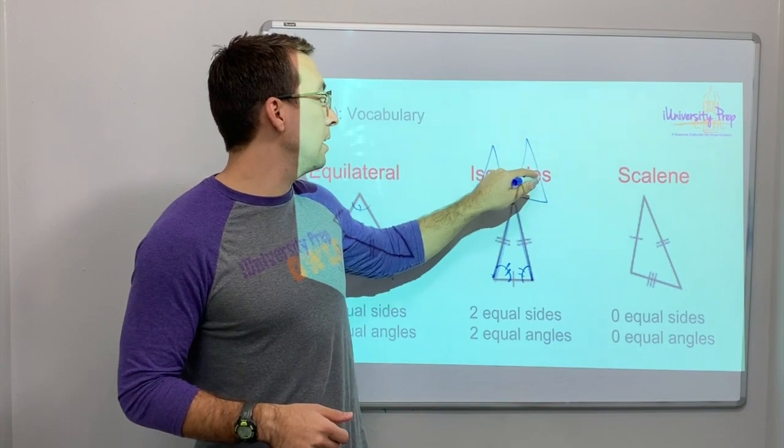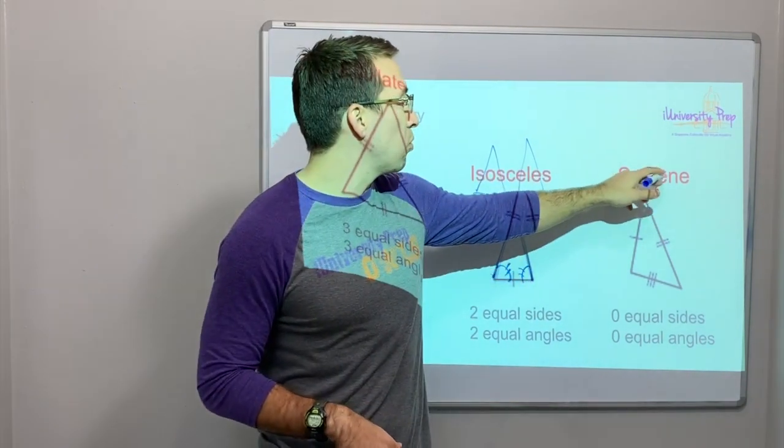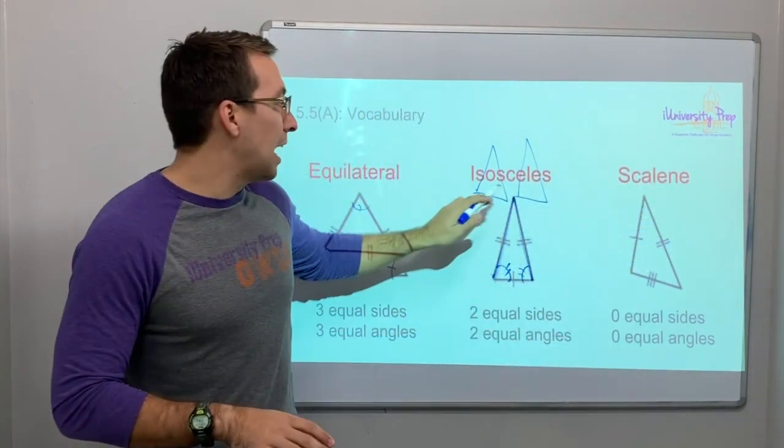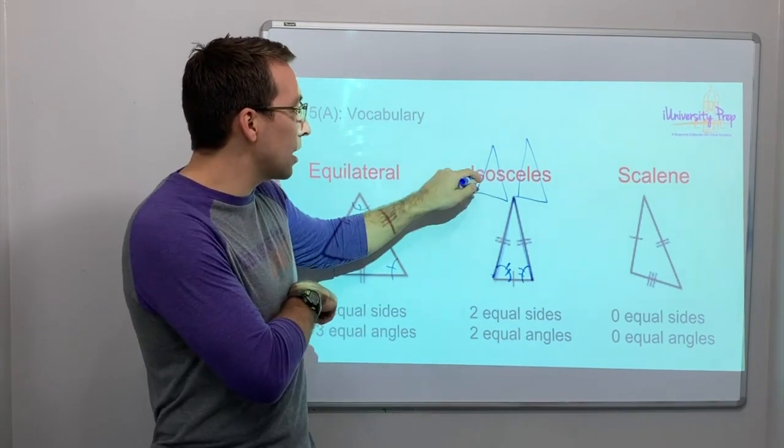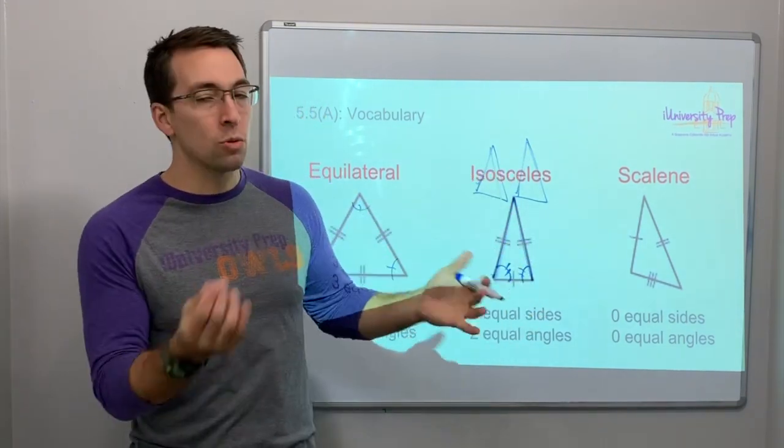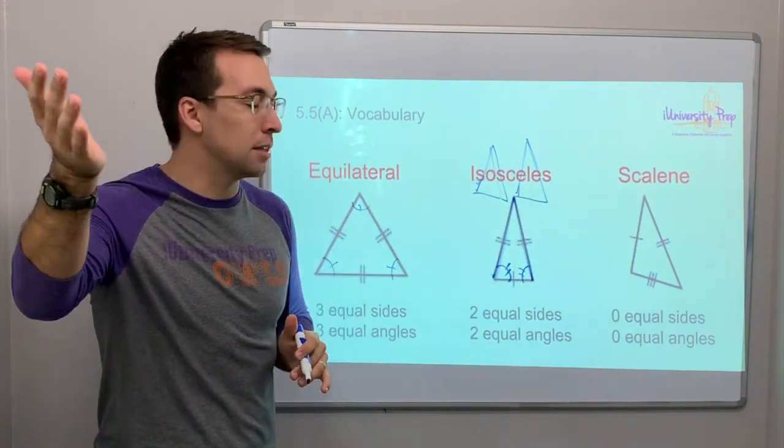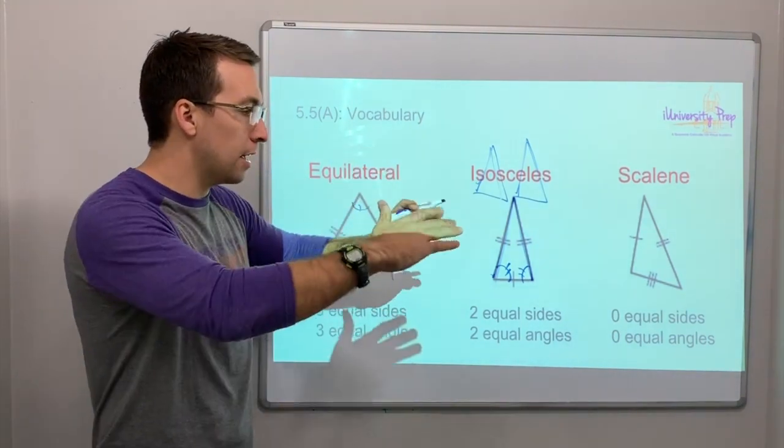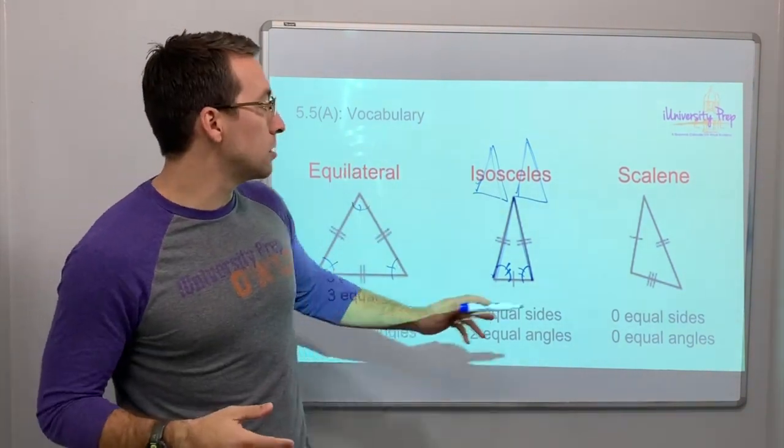Scalene only has one E-N-E. Isosceles has S-O-S and E-L-E - that's how I remember isosceles is two even lines, two even equal angles.